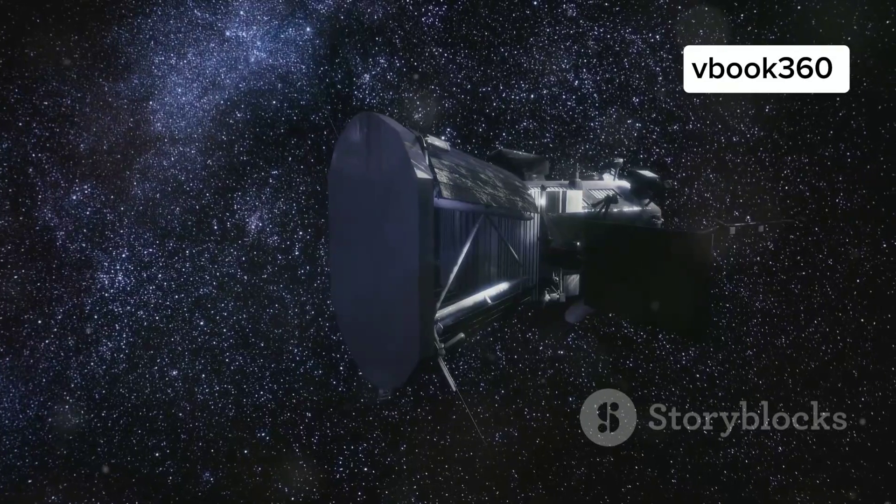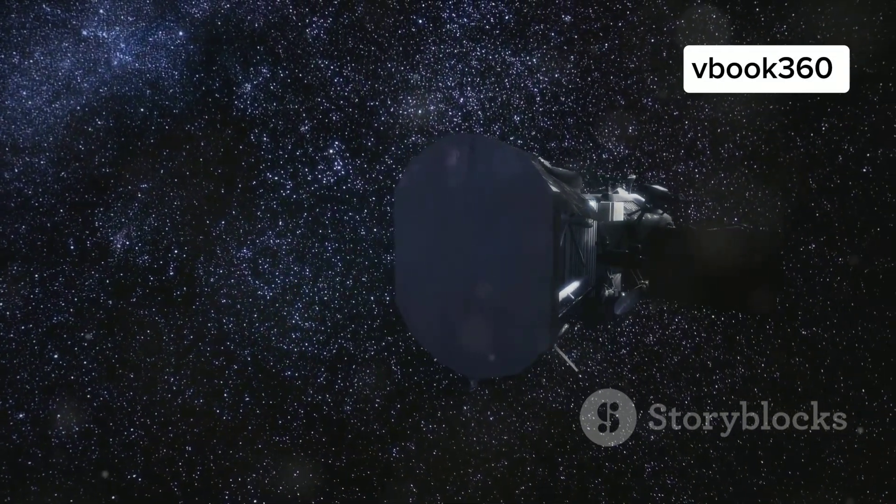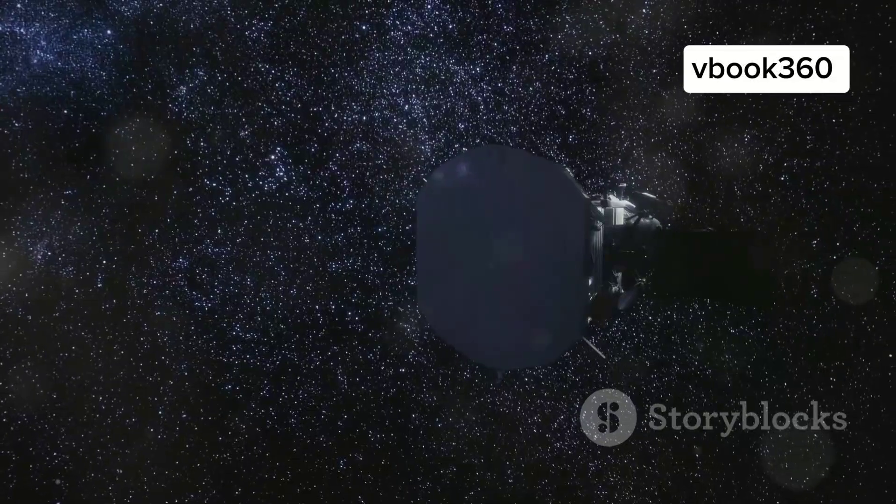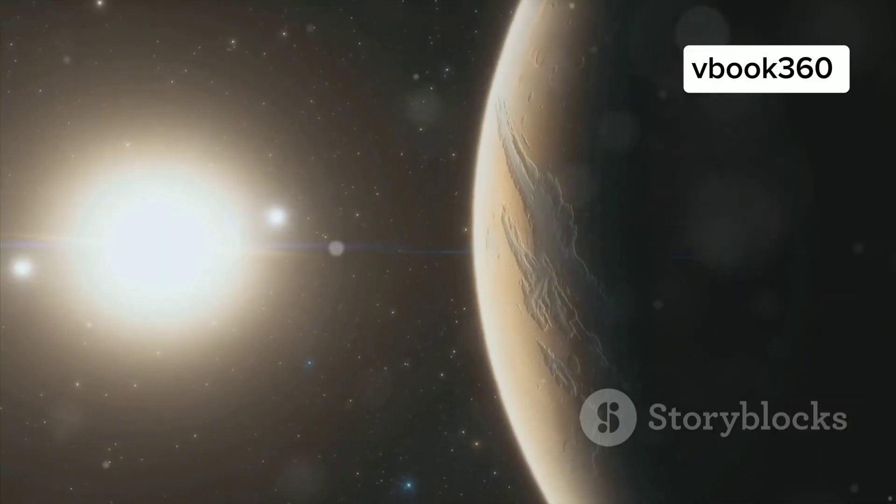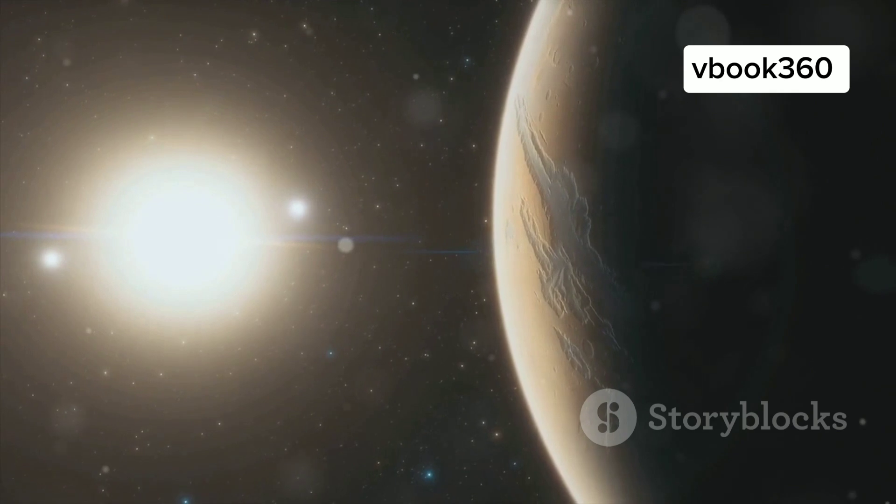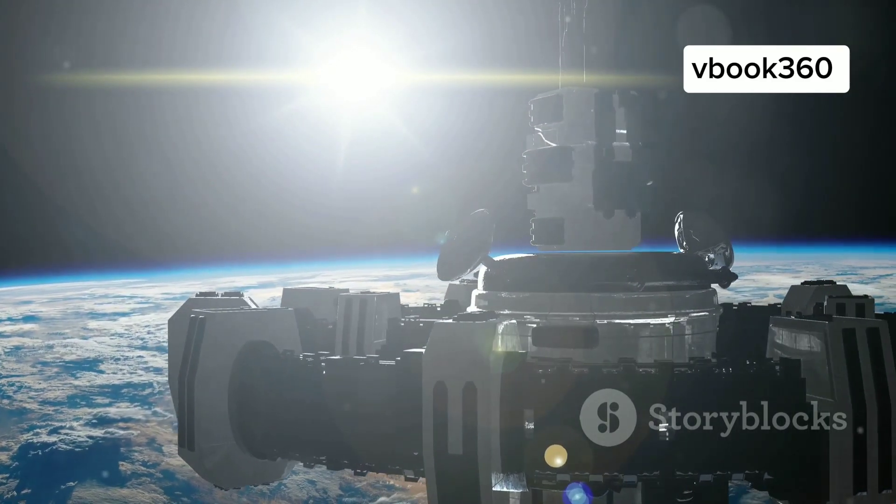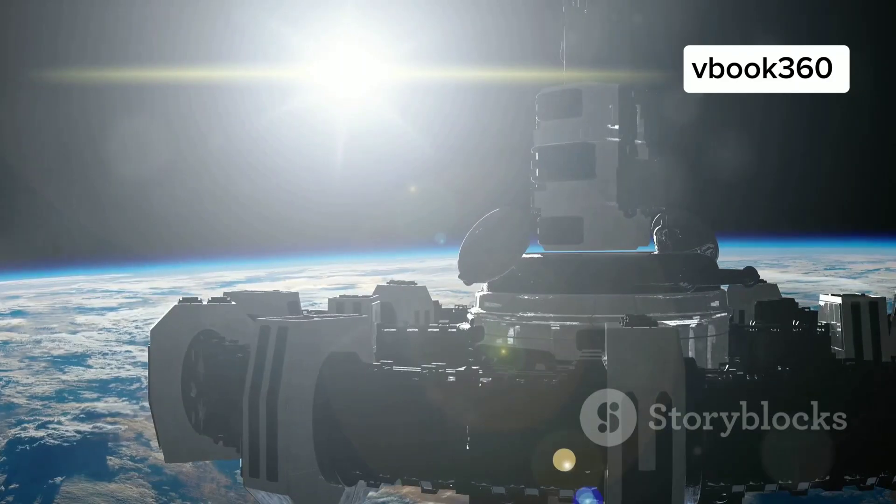Its mission is to seek out planets beyond our solar system, known as exoplanets, that orbit stars similar in size and temperature to our sun. TESS employs the transit method, observing the subtle dips in a star's brightness that occur when a planet passes in front of it. Earth 2.0, however, stands out from the thousands of exoplanets TESS has identified.